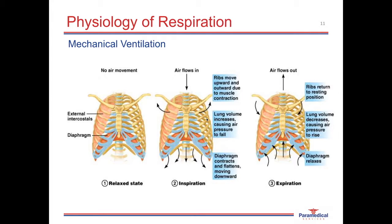During expiration, the signal to the diaphragm and intercostal muscles via the phrenic nerve ceases, resulting in relaxation of those muscles. The diaphragm moves upwards and the intercostal muscles relaxing results in recoil of the chest to its original size. This decrease in thoracic volume results in an increase in interthoracic pressure, so air passively flows from high pressure inside the lungs out to lower pressure outside until pressures equalize.